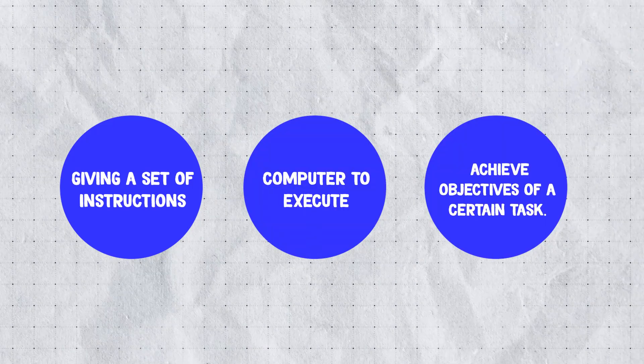Now let's divide this sentence into three different parts. The first part is giving a set of instructions. The second part is computer to execute. And the third is to achieve objectives or a certain task. A set of instructions is like giving a command or a how-to, step by step, to achieve something. Usually instructions are written in English, but for programming they are written in a programming language. Who is going to carry out those instructions? The computer. And why do we give them? Because we want to achieve an objective or complete a certain task. Essentially, you want to give a set of instructions to a computer to execute, to achieve a certain objective.